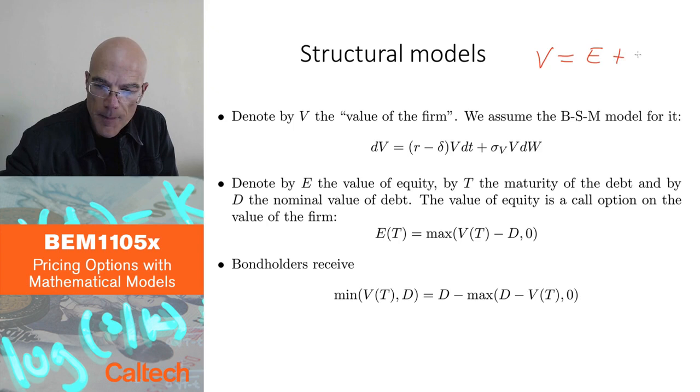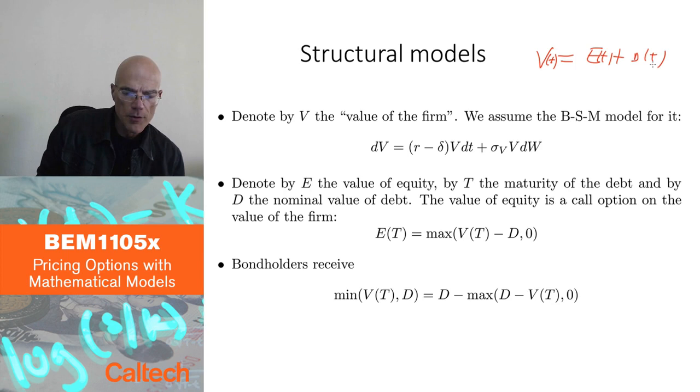At time T, V of T would be E of T plus D of T. We are going to make a very simplifying assumption that debt is just one single bond, zero coupon with maturity capital T and final nominal value, face value capital D. So, capital D is actually in this notation here, capital D of capital T. If we make this simplifying assumption, then we only have to worry about the possible default at time T and otherwise there is no default.